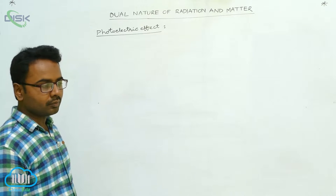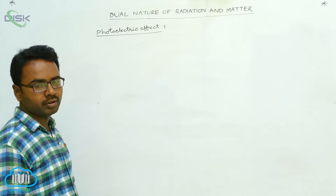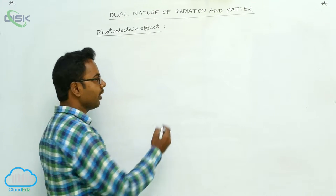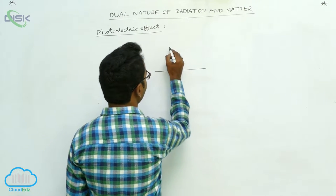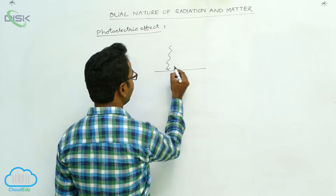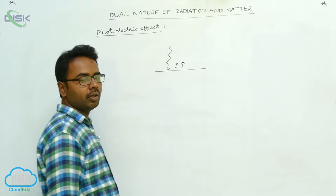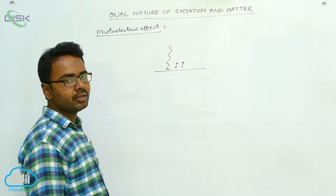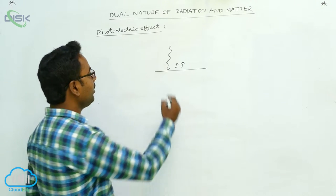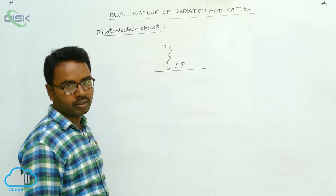Photoelectric effect is nothing but photoelectric emission. When a metal surface is exposed to light of a suitable frequency, then the electrons are emitted from the metal surface.